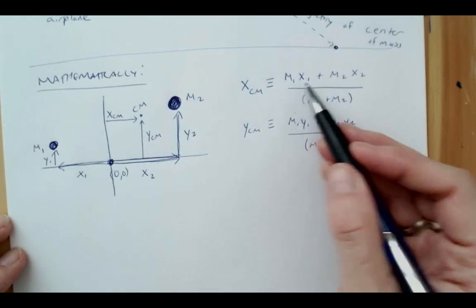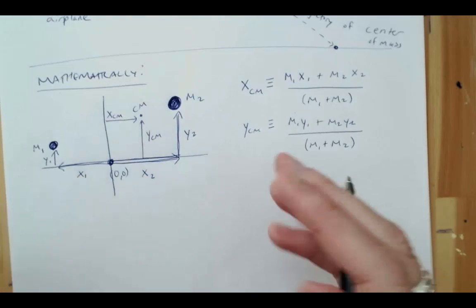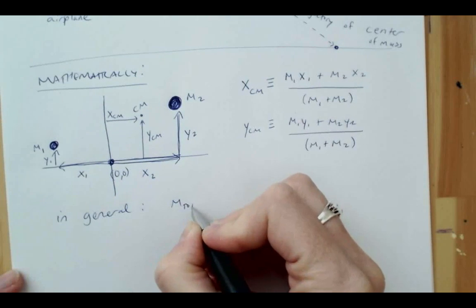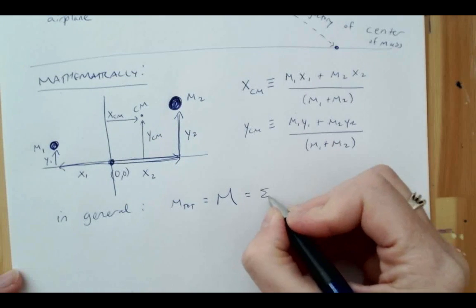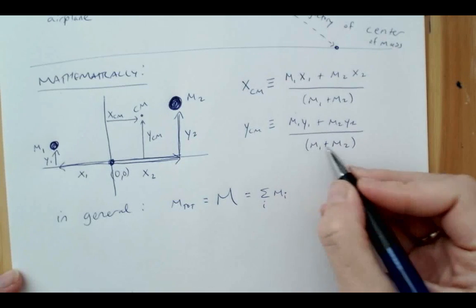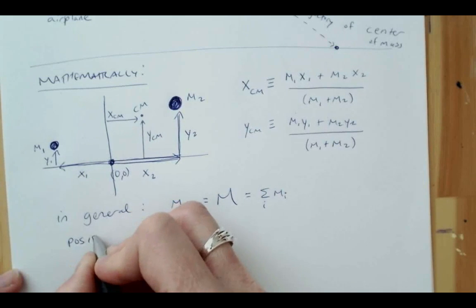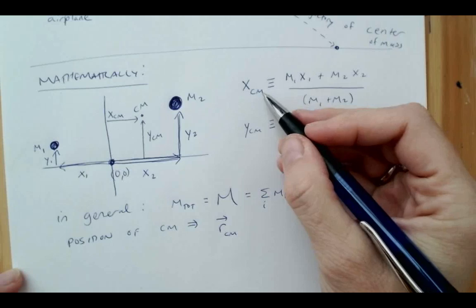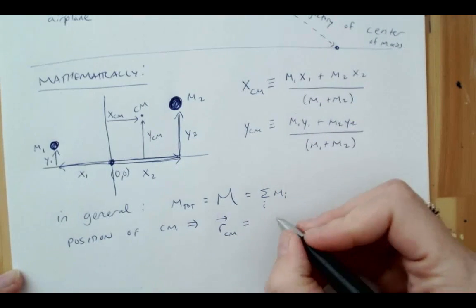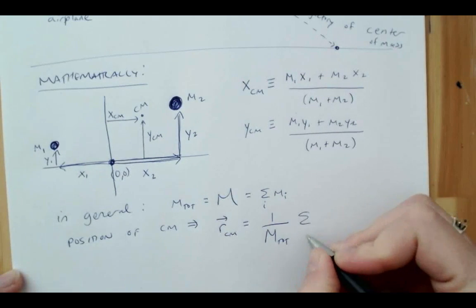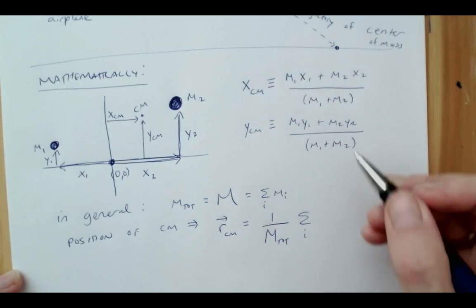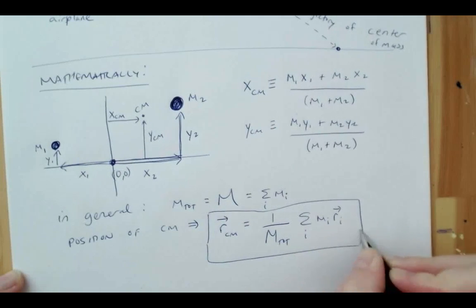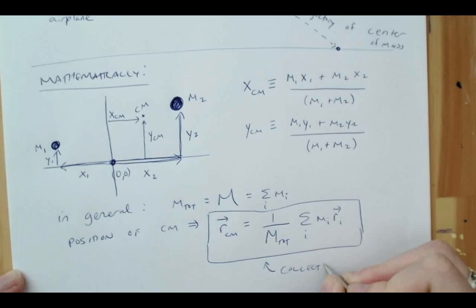In general you don't always just have two objects — you might have more, or it might be a continuous object, in which case you can think of it as the sum of infinitely small masses dm. The total mass M equals the sum over i of all M sub i's: M1 plus M2 plus M3, etc. The position of the center of mass in general is a vector r, equal to 1 divided by the total mass times the sum over i of M sub i times R sub i. This applies for a collection of particles.